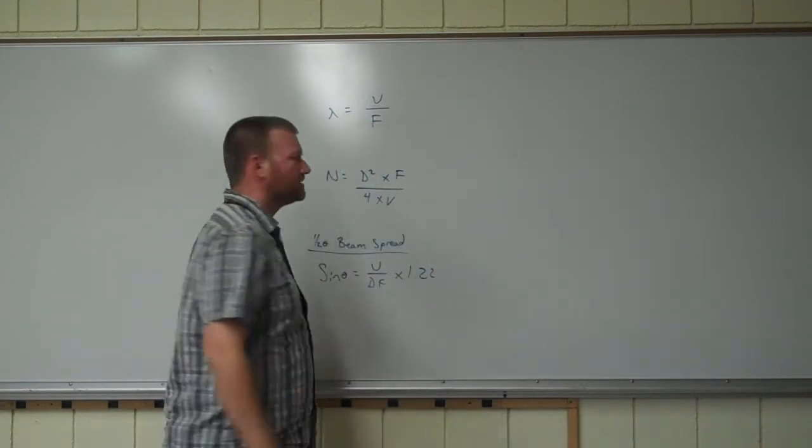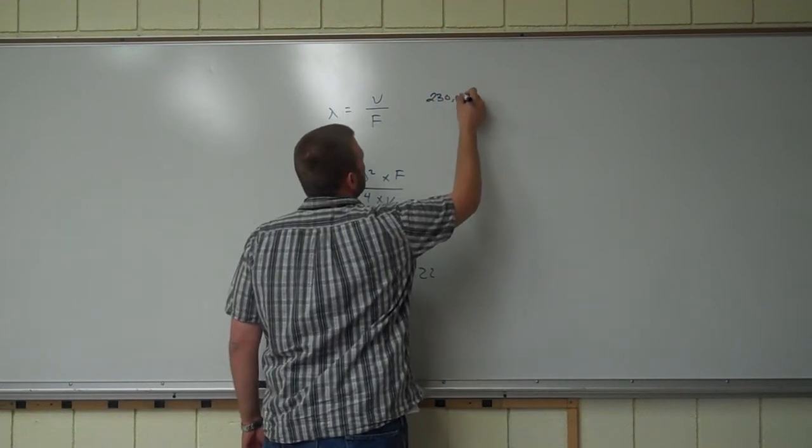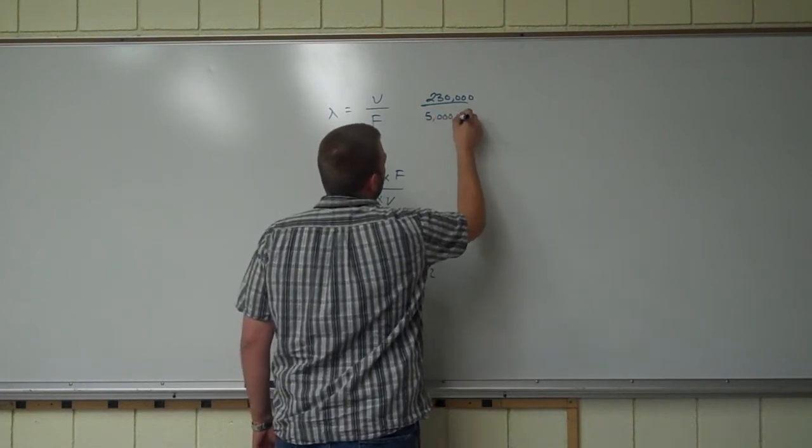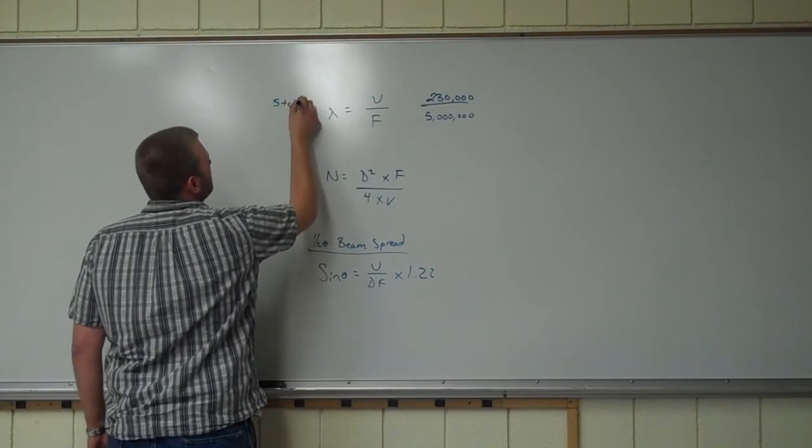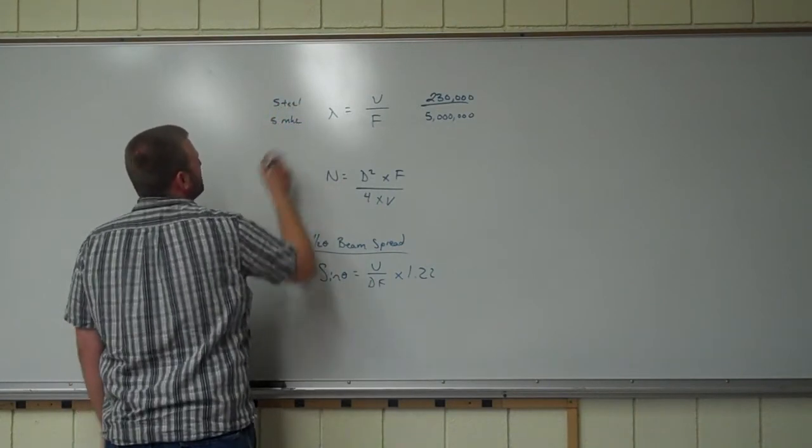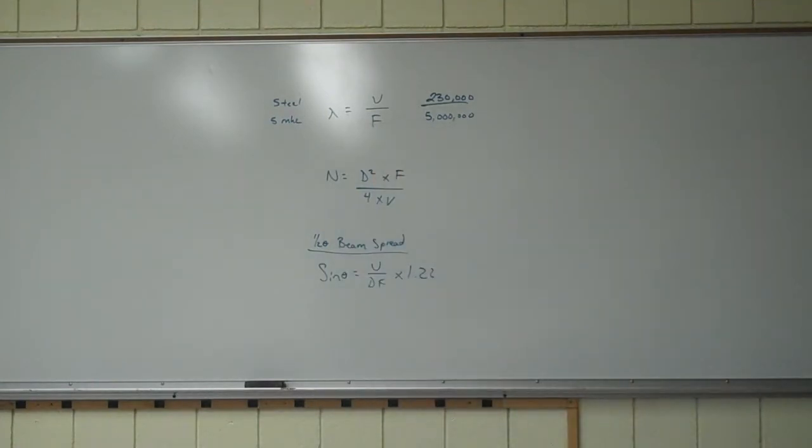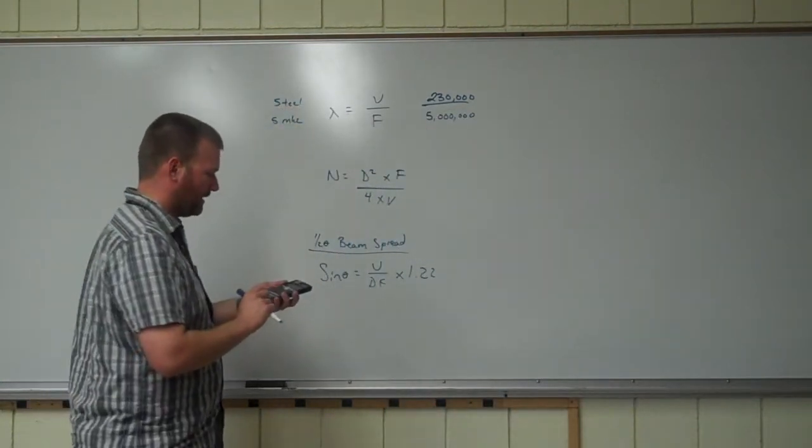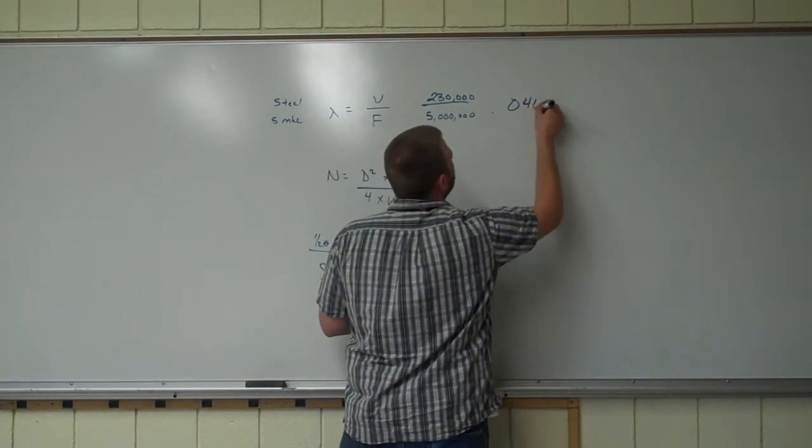Let's just make it easy. Let's just say we have a velocity of 230,000 inches per second coming right off your data sheet there, and a frequency of 5 megahertz. So we'll say this is steel and this is 5 megahertz. Let me grab a calculator real quick. All right. So we've got our information there.